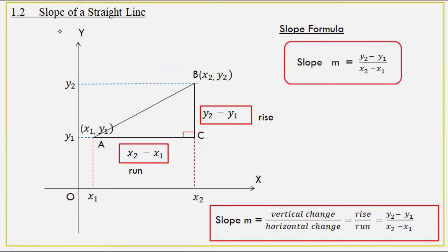The next day, we will take exercise 1.2, starting with problems 11 or 12. In this exercise, we will take exam number 5 or 6 on the resume. In this video, we have the slope of a straight line.